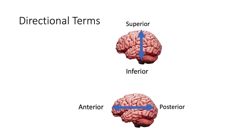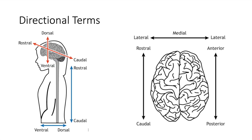Superior always means towards the top of the head, and inferior always means toward the feet — doesn't matter if we're talking about the brain or the spinal cord. Anterior always means towards the front of the body, and posterior always means towards the back. Dorsal refers to the superior portion of the brain, and ventral refers to the inferior portion. Rostral refers to the anterior part of the brain, and caudal refers to the posterior part. Lateral means toward the sides, and medial means toward the middle.